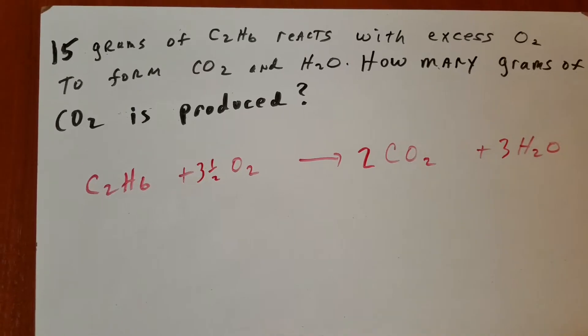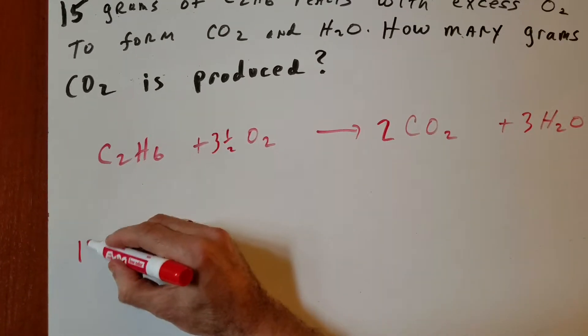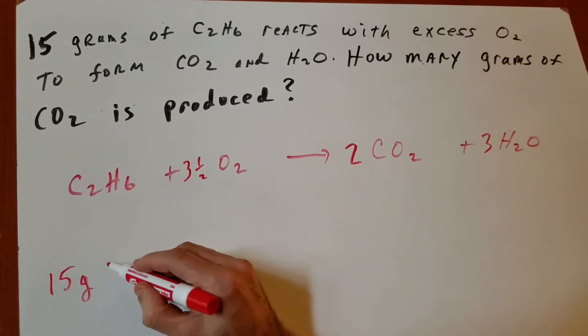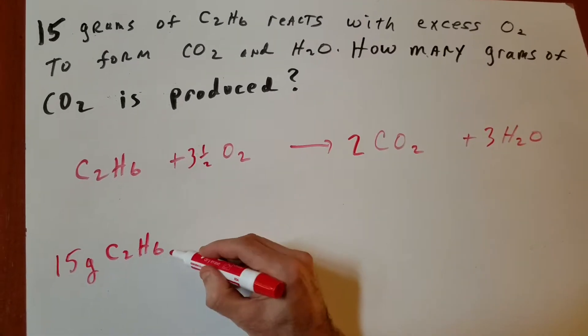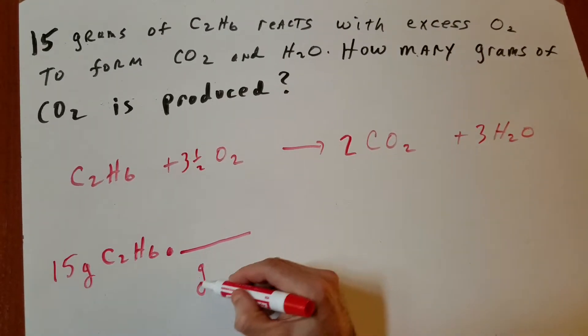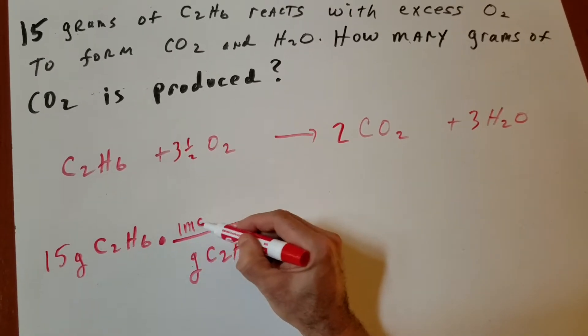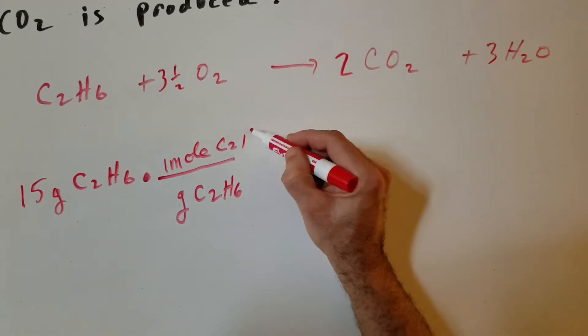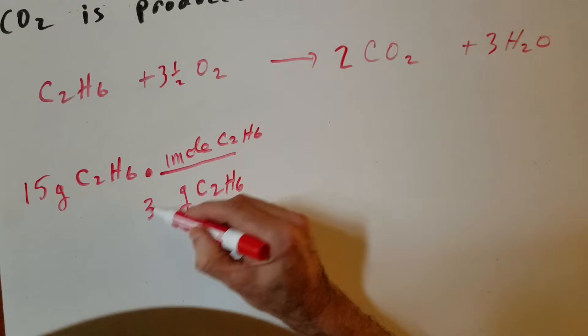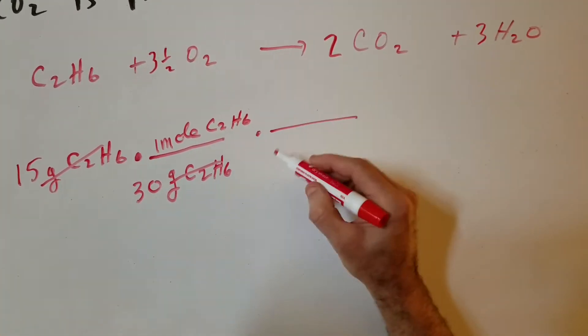So what we're going to do is, now that we've got the equation balanced, we're going to simply take 15 grams, write the given, of C2H6. I'm going to first convert it into moles, so I'm going to put a little dot, and I'm going to just do dimensional analysis. Now, one mole of C2H6 gives me 30 grams, and that cancels out the grams.